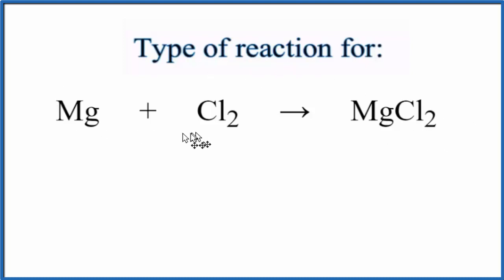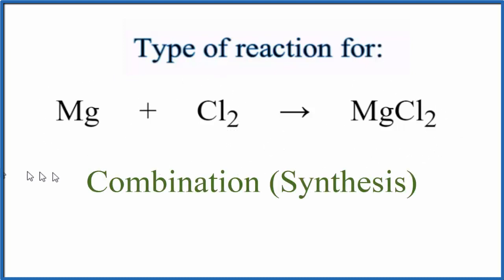Looking at the reaction, we have two substances in the reactants. They combine to form magnesium chloride, just one substance. Since we have two different substances coming together to form one substance, this is a combination reaction.